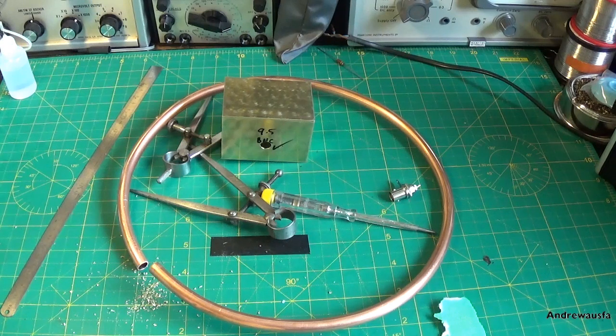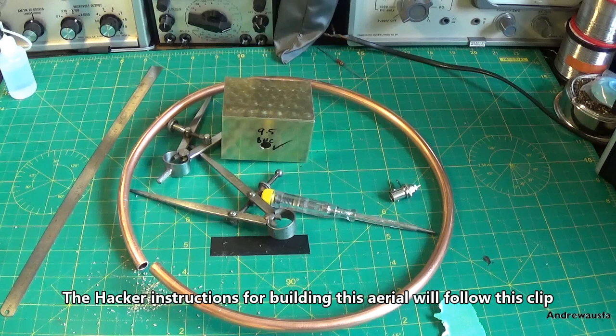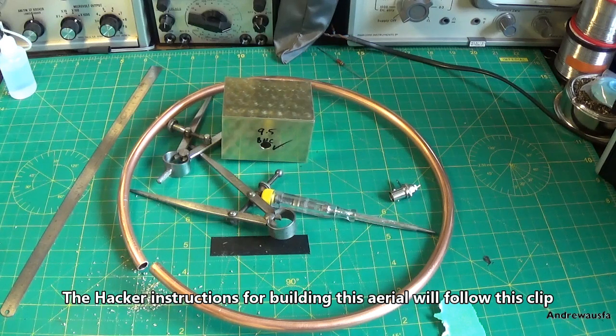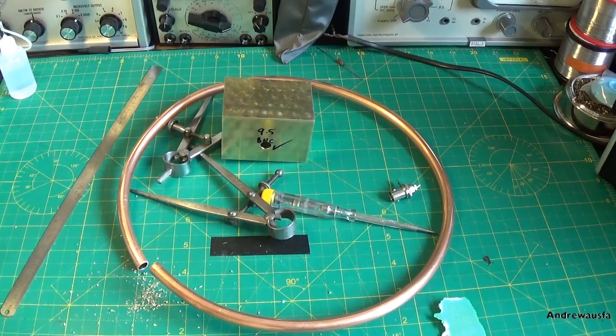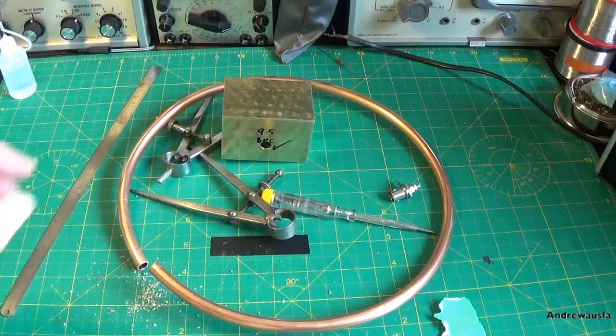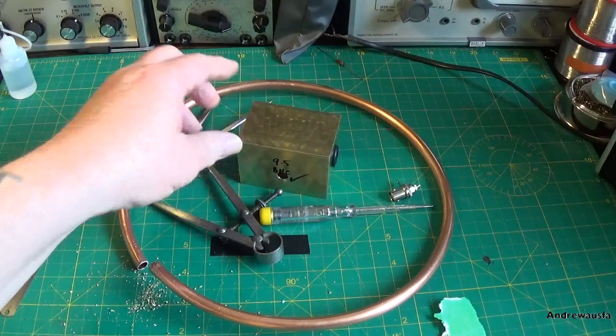And that is the official Hacker loop aerial for radio alignment. Anyone familiar with Hacker radios and who has the manuals will know that they describe in most of the manuals how to make a loop aerial for radio alignment. And this is it.